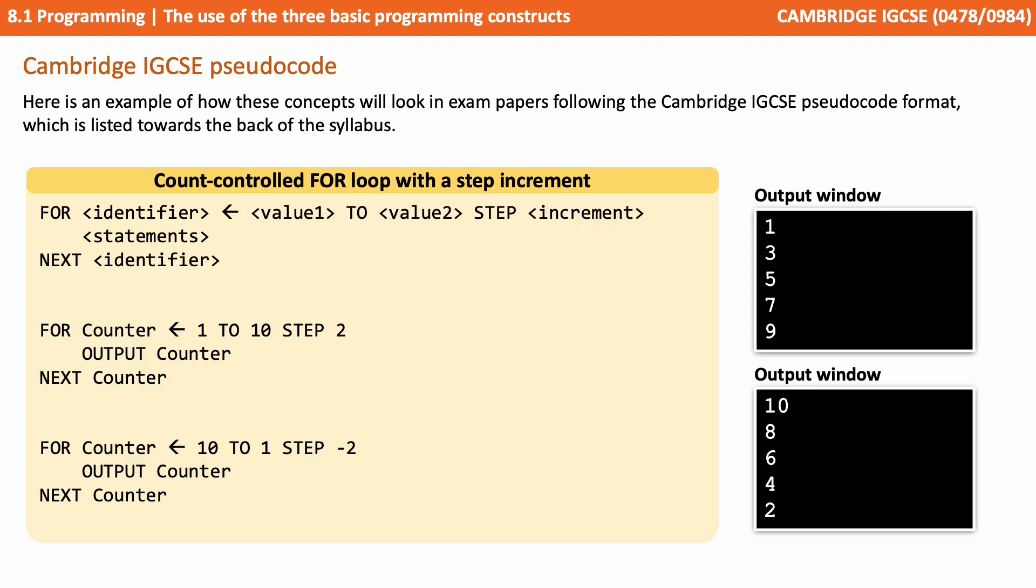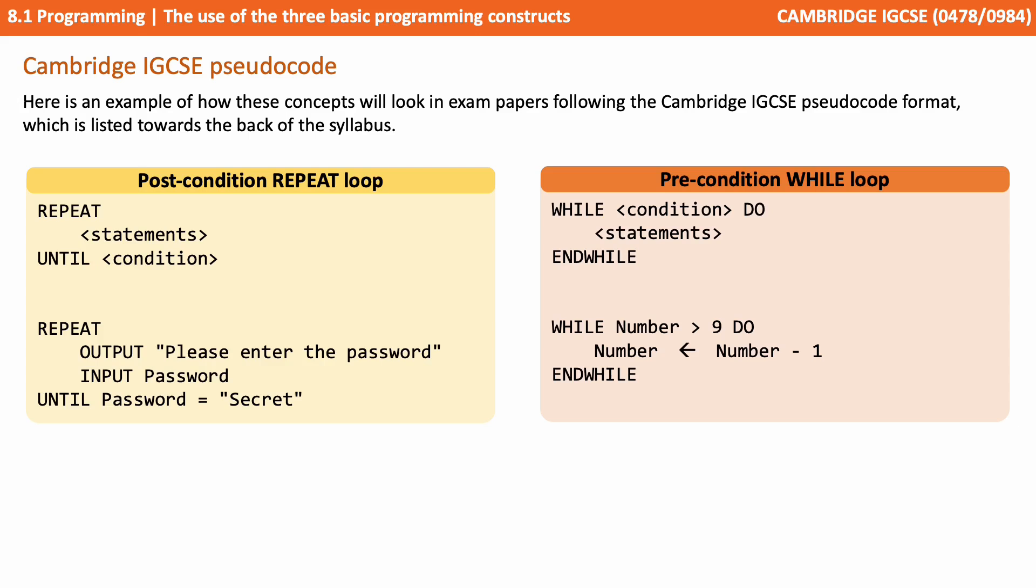And then here's an example of our post-condition repeat loop and our pre-condition while loop. They're both conditional loops, which means we don't exit until conditions are met. The only difference is the repeat loop does the check at the end and the while loop does the check at the start.